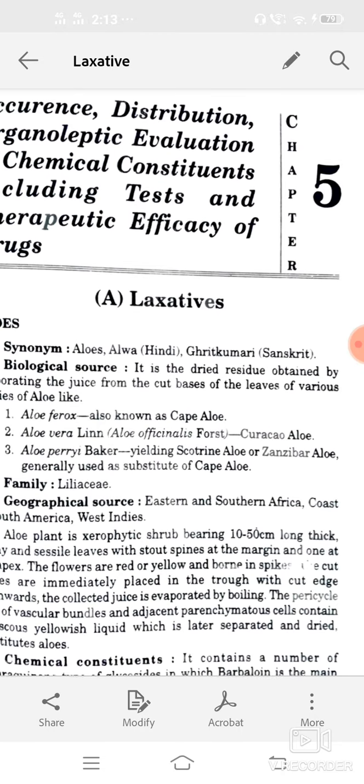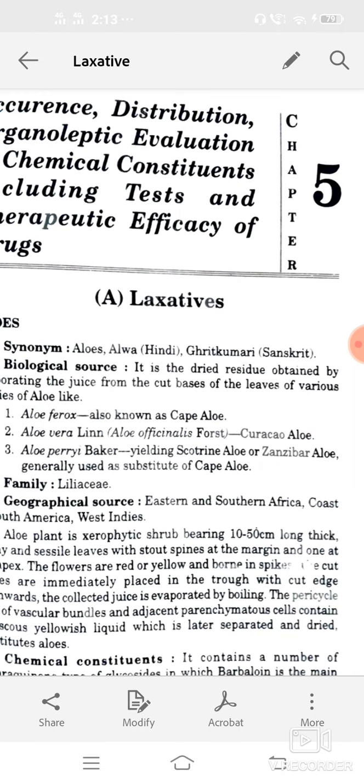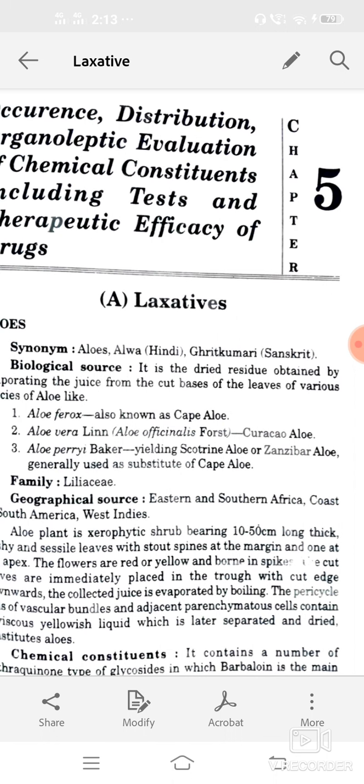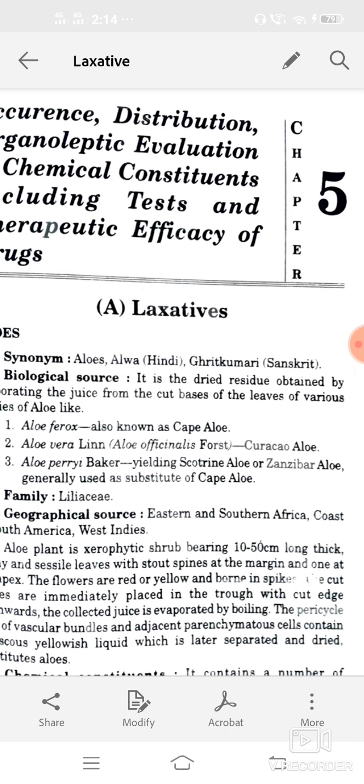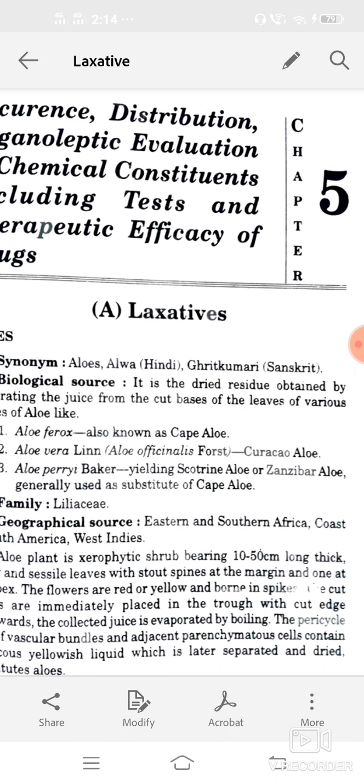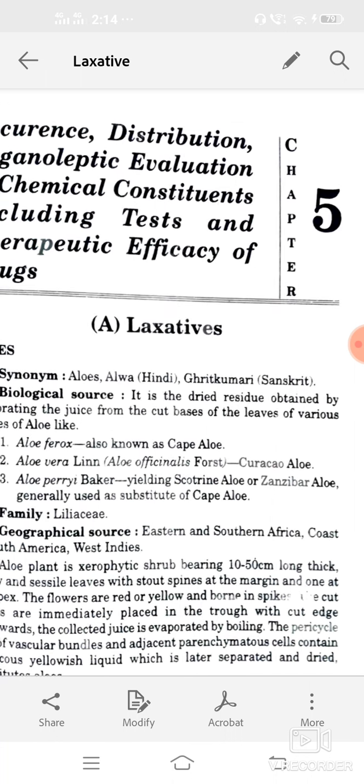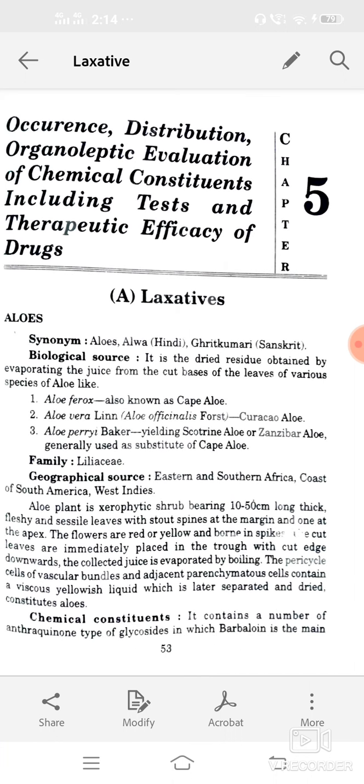First drug is aloe, synonym aloe vera or in Sanskrit, grit kumaris. Biological source: it's a dry residue obtained by evaporating the juice from cut bases of leaves of various species like aloe officinalis, aloe ferox, aloe pyraes, belongs to family Liliaceae. Geographical source: eastern or south Africa or in West Indies.